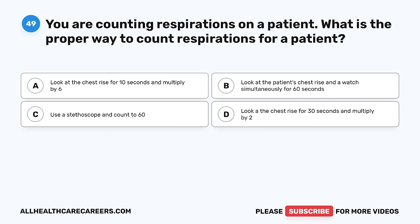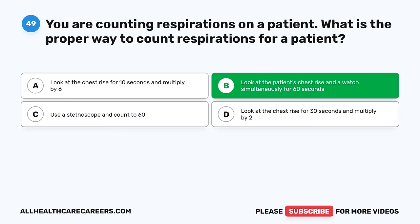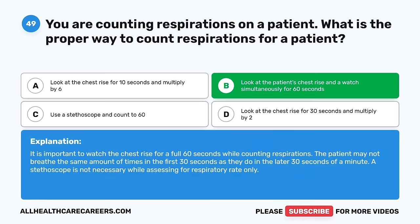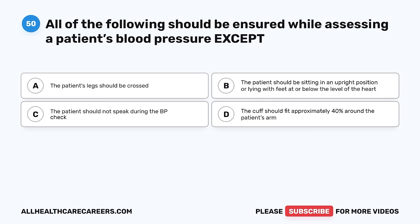Question 49. You are counting respirations on a patient. What is the proper way to count respirations? A. Look at the chest rise for 10 seconds and multiply by 6. B. Look at the patient's chest rise and a watch simultaneously for 60 seconds. C. Use a stethoscope and count to 60. D. Look at the chest rise for 30 seconds and multiply by 2. The correct answer is B. It is important to watch the chest rise for a full 60 seconds while counting respirations. The patient may not breathe the same amount of times in the first 30 seconds as in the later 30 seconds. A stethoscope is not necessary while assessing respiratory rate only.